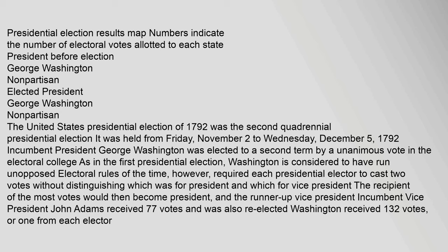Incumbent President George Washington was elected to a second term by a unanimous vote in the Electoral College. As in the first presidential election, Washington is considered to have run unopposed. Electoral rules of the time, however, required each presidential elector to cast two votes without distinguishing which was for president and which for vice president. The recipient of the most votes would then become president, and the runner-up vice president. Incumbent Vice President John Adams received 77 votes and was also re-elected. Washington received 132 votes, or one from every elector.